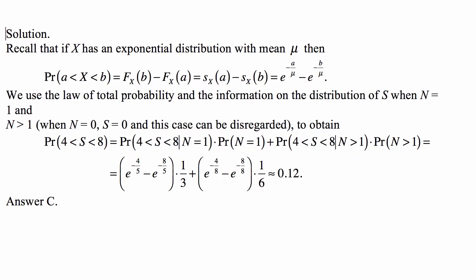Let's note that if X has exponential distribution with mean mu, then the probability that S is between A and B is the difference between the cumulative distribution function at B minus the cumulative distribution function at A, which is the same as the survivor function at A minus the survivor function at B. And that's e to the minus A over mu minus e to the minus B over mu.